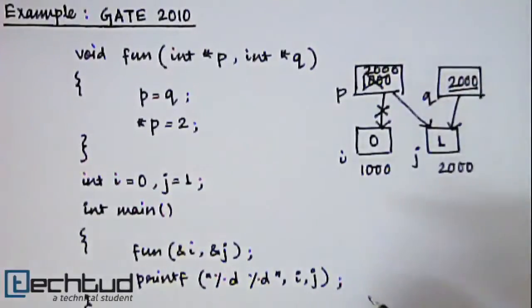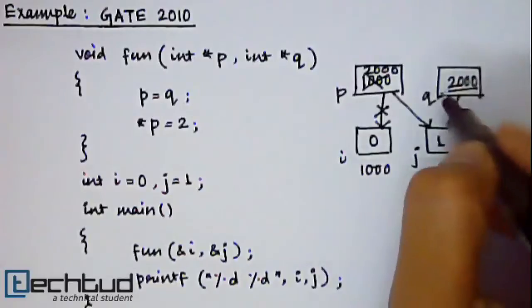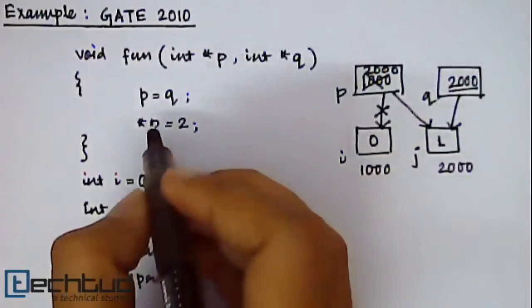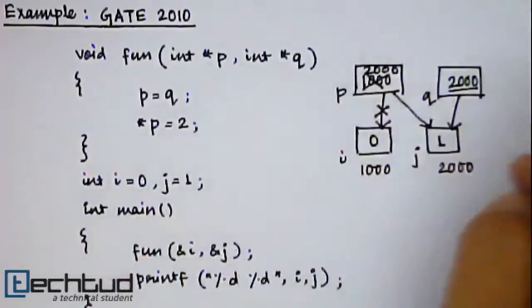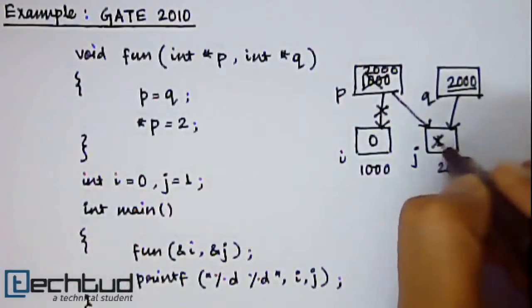So what will happen? 2000 will get assigned here and now this link has been cut and p now points to j also. So both p and q now point to j. Now what we are doing? We are writing value of p equal to 2. That means the value of j will be changed and it will become 2.